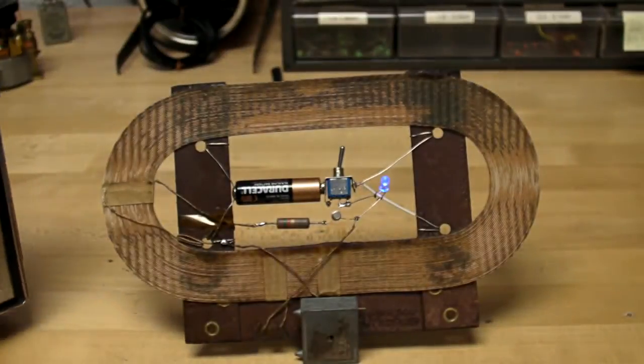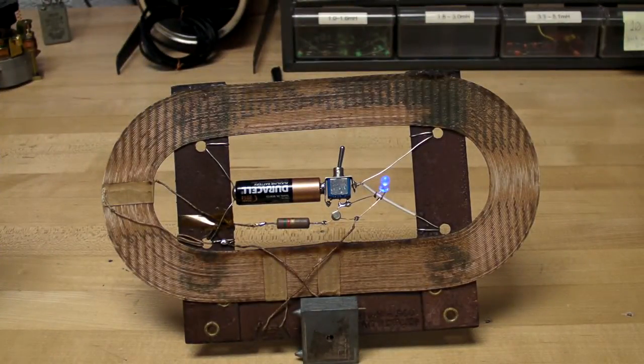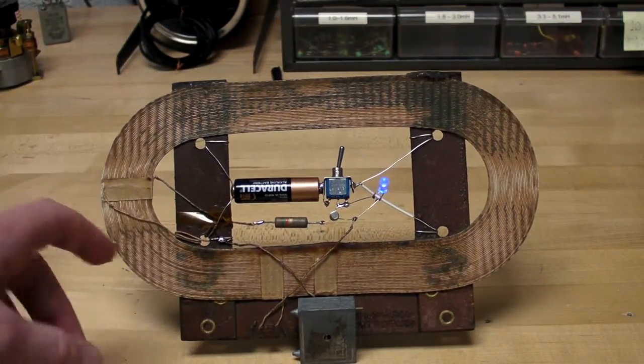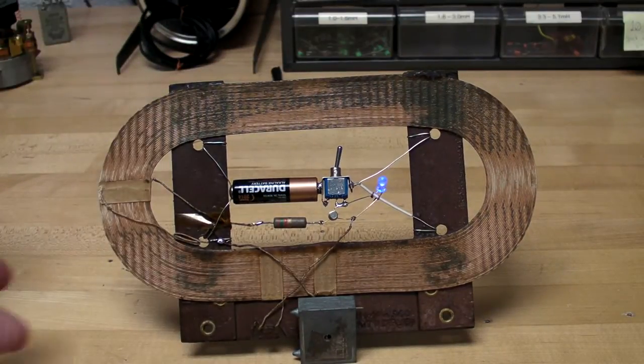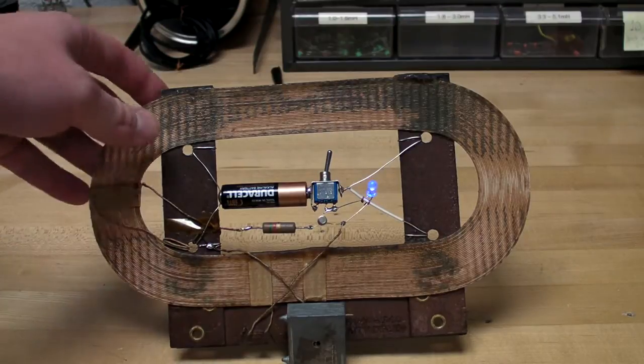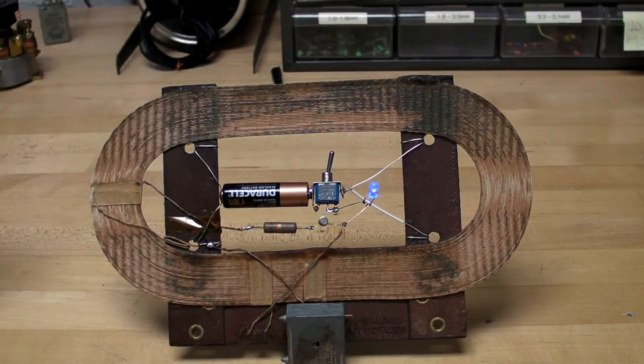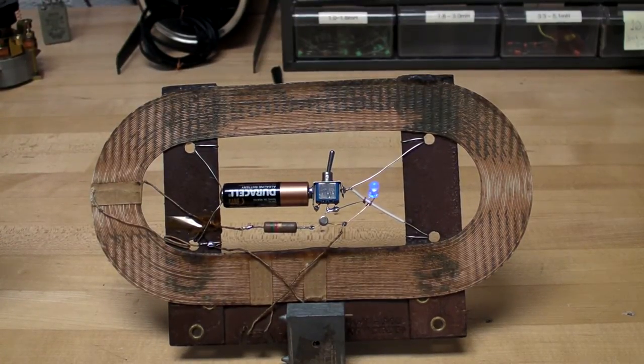So there you go, that's my joule thief using an AM antenna that just happens to oscillate in the AM range and can transmit to an AM radio. Thanks for watching.